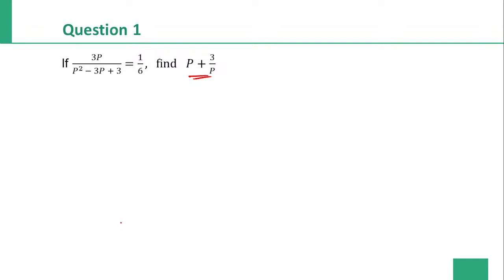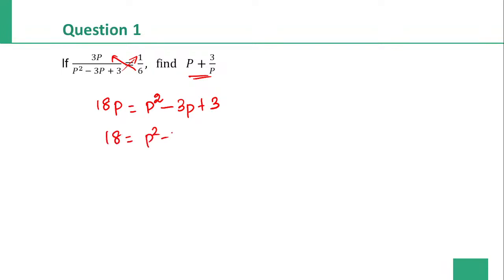Using the first method, we cross multiply. 3p into 6 gives 18p, equal to 1 into p squared minus 3p plus 3. Dividing both sides by p, we get 18 equals p squared by p minus 3p by p plus 3 by p, which simplifies to p minus 3 plus 3 by p.